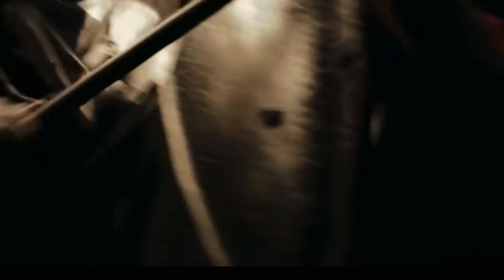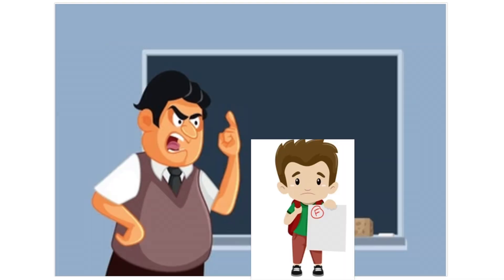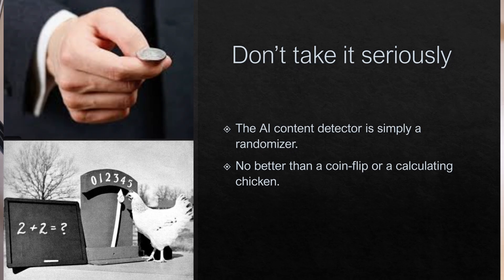That phrase is powerful and will force everyone to focus on the serious adult accusation of fraud. Write down that statement and take it to the administration if you must. Tell your teacher to submit your paper 50 times into the AI checker. If one of those 50 times the AI checker passes your paper, your teacher is left in a dilemma: accept the 1 in 50 chance the student is honest, or believe the calculating chicken.